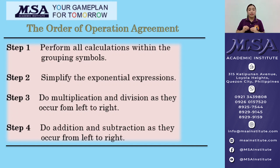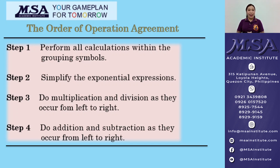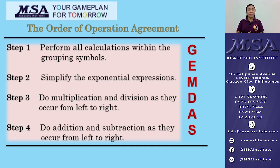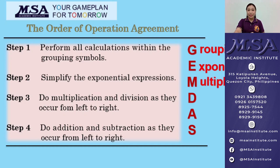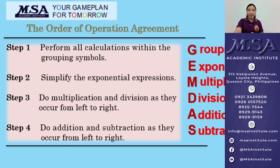These steps represent the GEMDAS rule. What is the GEMDAS rule? G for Grouping, E for Exponent, M for Multiplication, D for Division, A for Addition, and S for Subtraction.